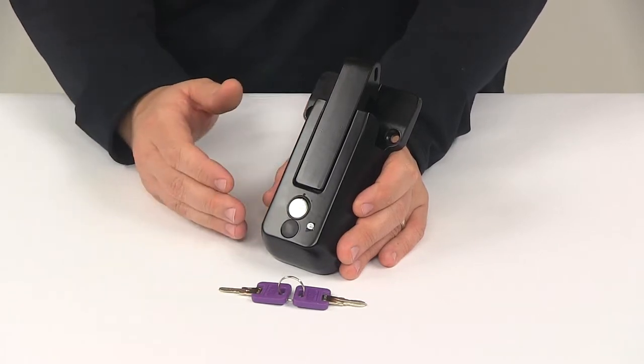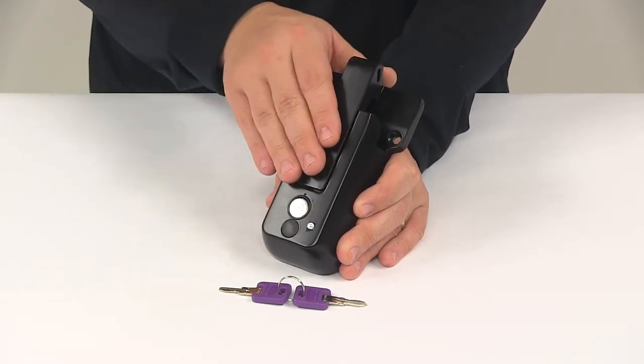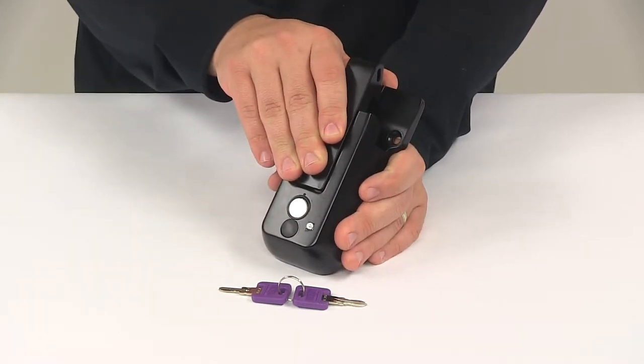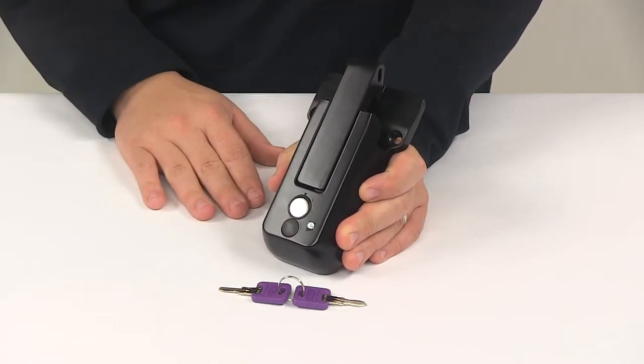You don't have to worry about the lock getting cut because this cannot be easily removed from the trailer like a hasp could, and it can't be cut like a padlock could.